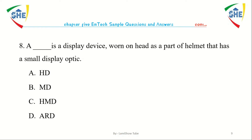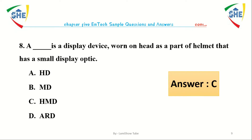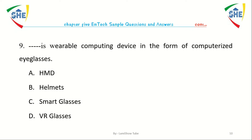Question number 8: A dash is a display device worn on and as part of a helmet that has a small display optic — HMD (Head-Mounted Display). Question number 9: Dash is a wearable computing device in the form of computerized eyeglasses. Options: HMD, helmet, smart glasses, virtual reality glasses.